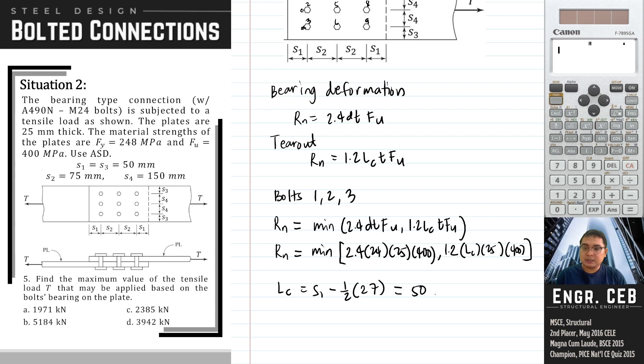To solve for LCT, that is F1 minus half of the hole. Take note that the diameter of the hole is 27 and we do not need to add another 2 mm because we are not computing for net area. F1 is given as 50 minus one half of 27. Therefore, this is 36.5 mm.